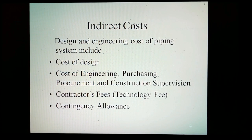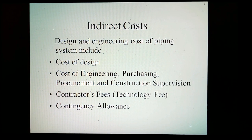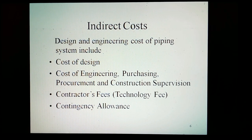Indirect costs associated with piping include design and engineering costs, which cover the cost of designing and engineering of the piping system, purchasing, procurement, and construction supervision. Also included are contractor fees, technology fees, and contingency allowance — an allowance to cover unforeseen circumstances such as labor disputes, design errors, etc.